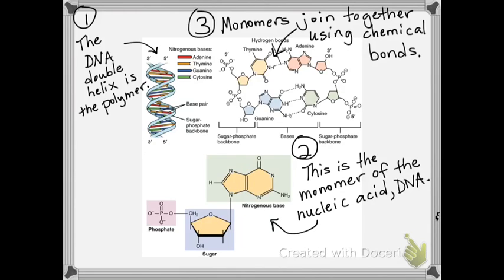Number one, the DNA double helix is the polymer. Number two, this is the monomer of the nucleic acid DNA. Three, monomers join together using chemical bonds.